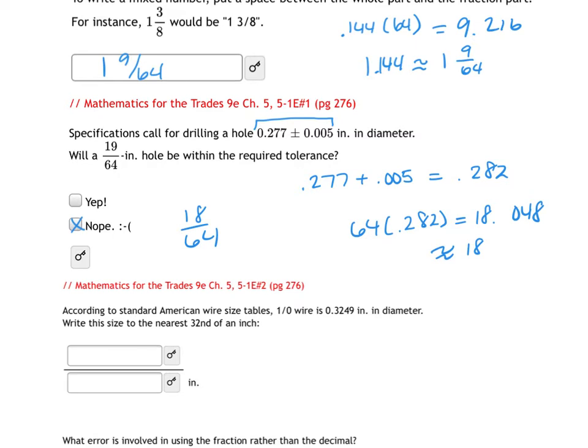So what we do on this is we just do the equivalent decimal. Or I could have done the 19 divided by 64. If I did 19 divided by 64, I would have gotten 0.296875. And we can see that is larger than what I get to have for my hole plus the tolerance.